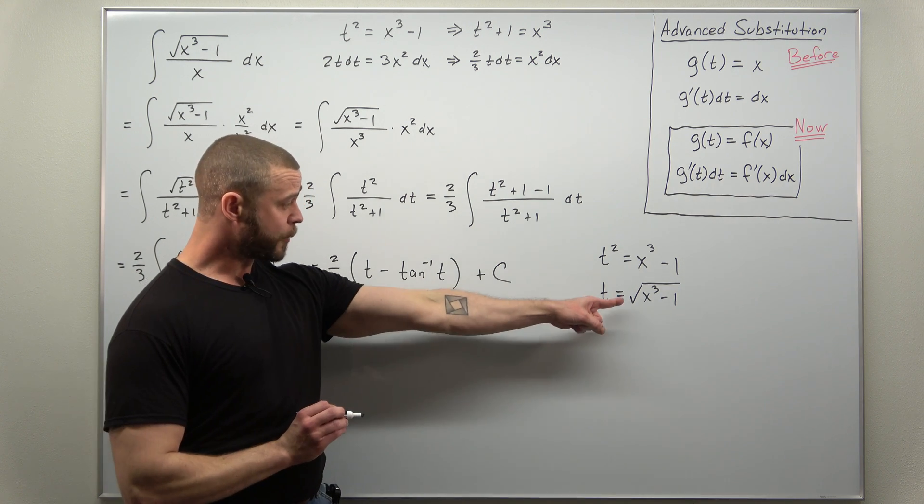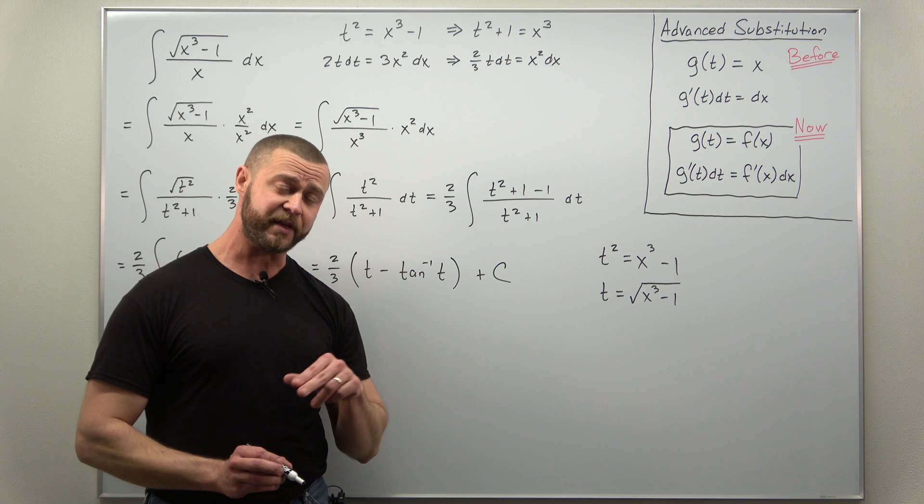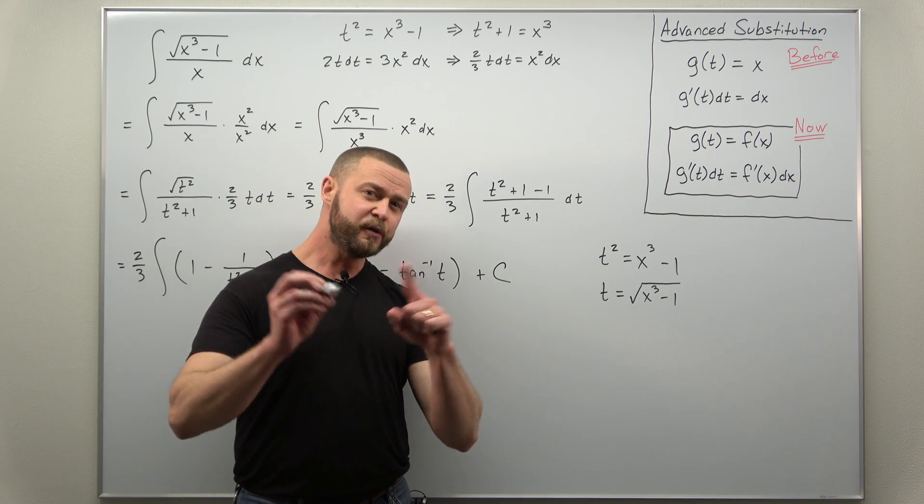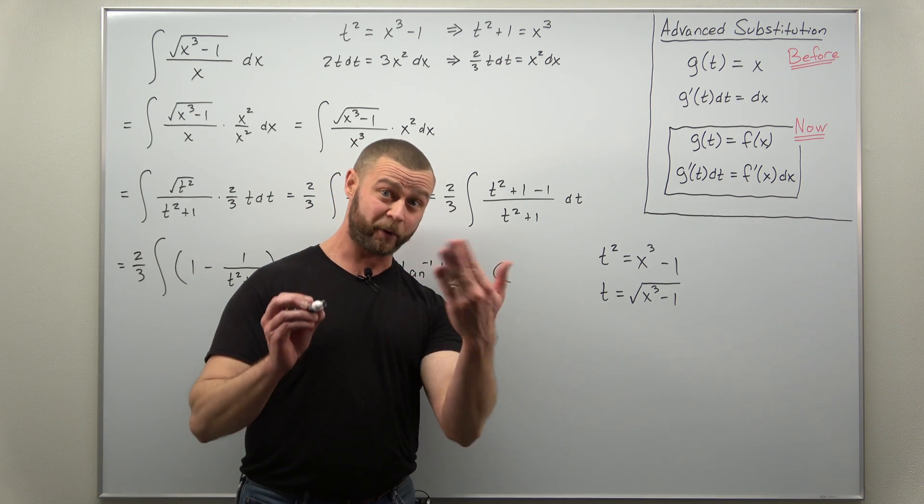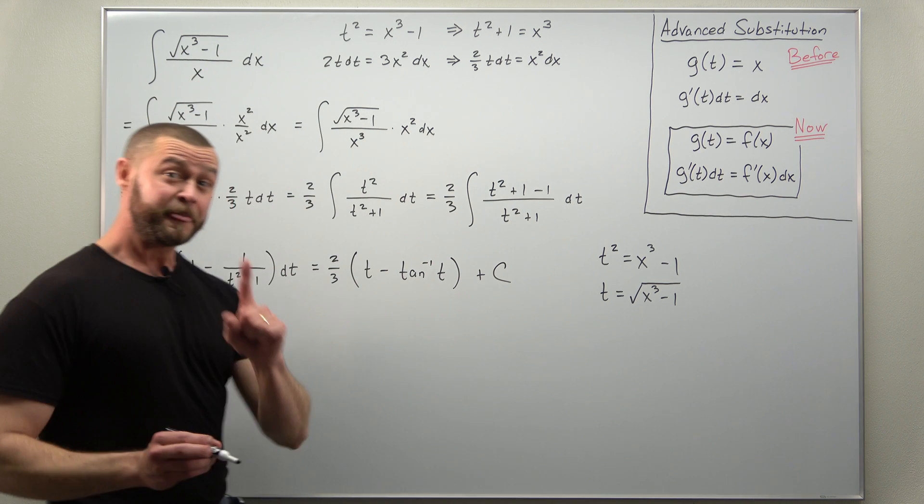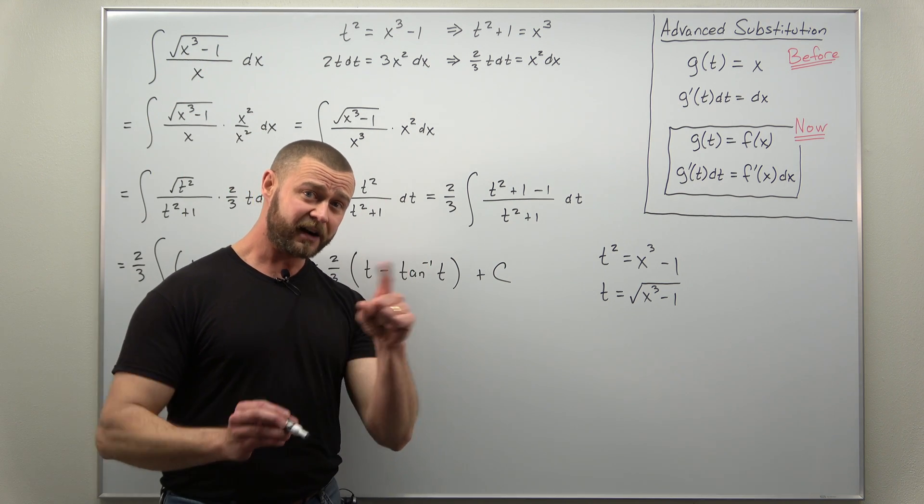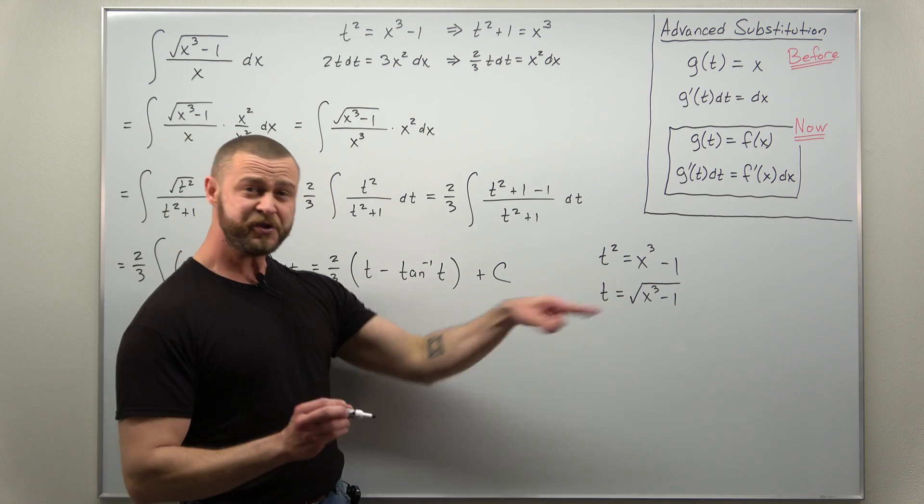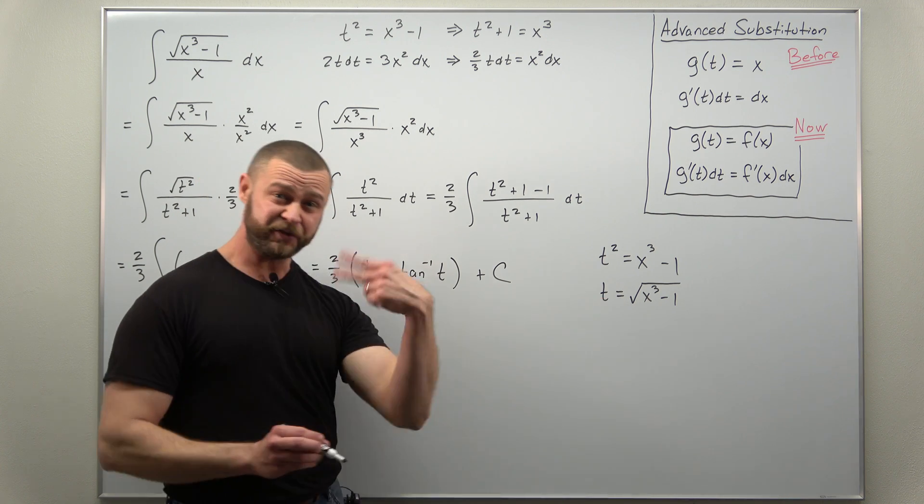All right now you're probably wondering why we're not accounting for the plus or minus there. We can generally choose a valid interval or domain for which here the square roots and squares cancel out. So we're just going to choose a domain here for which we can use the positive root.